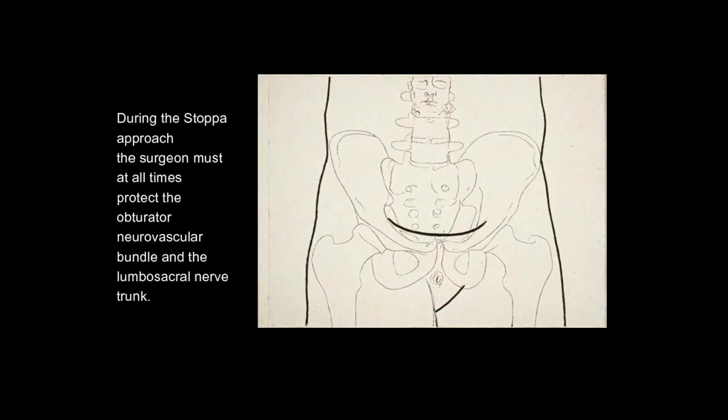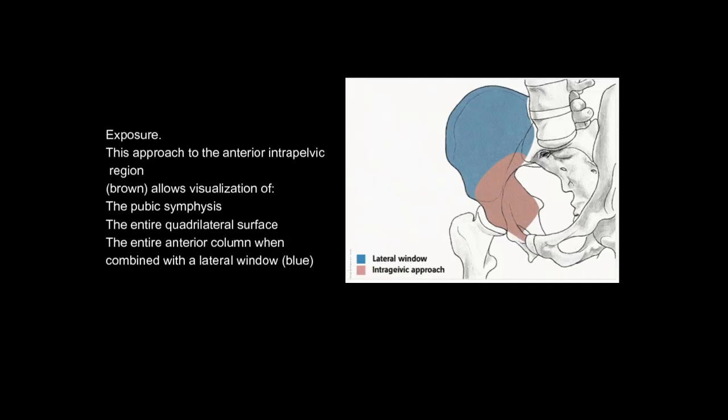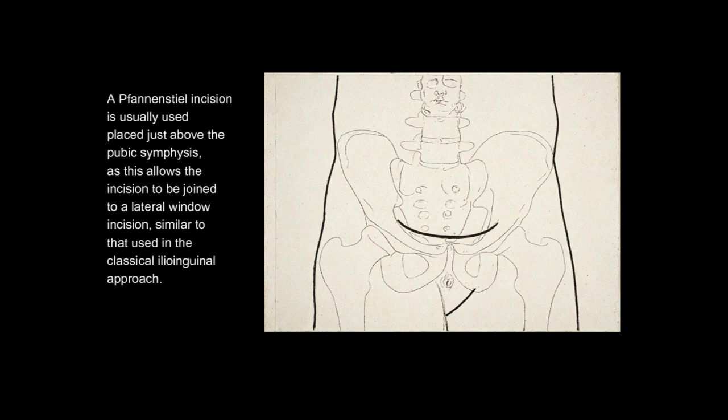During the Stoppa approach, the surgeon must at all times protect the obturator neurovascular bundle and the lumbosacral nerve trunk. This approach to the anterior intrapelvic region allows visualization of the pubic symphysis, the entire quadrilateral surface, and the entire anterior column when combined with a lateral window. A transverse incision is usually placed just above the pubic symphysis, as this allows the incision to be joined to a lateral window incision similar to that used in the classical ilioinguinal approach.